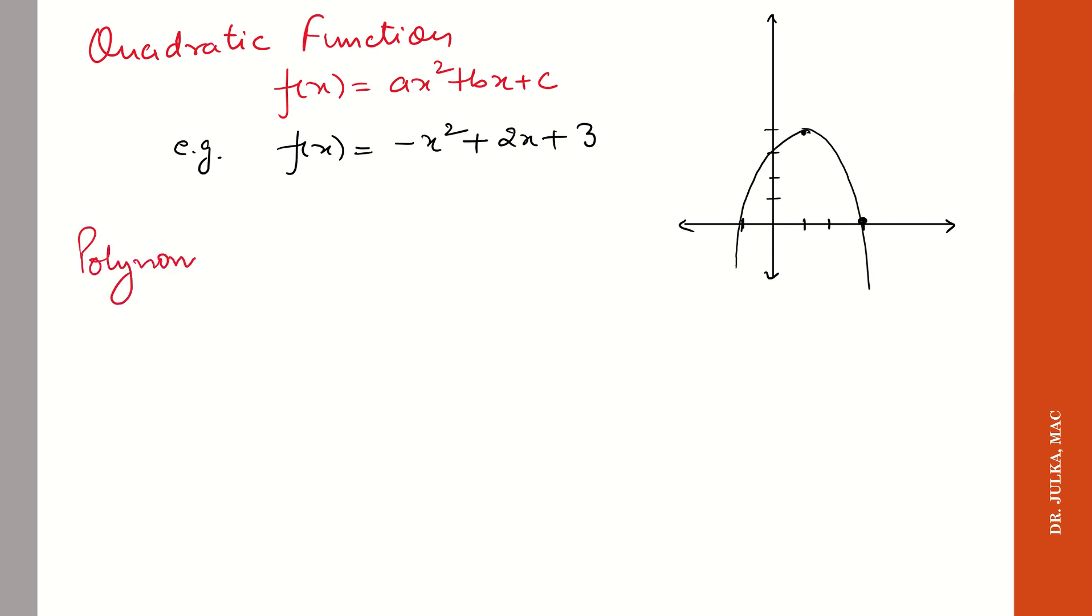Next is polynomial function. Polynomial functions are denoted like f(x) = a₀xⁿ + a₁xⁿ⁻¹ + a₂xⁿ⁻² and so on plus aₙ. For example, we have a function 2x⁴ + 3x³ + 7x² + 6x + 100.